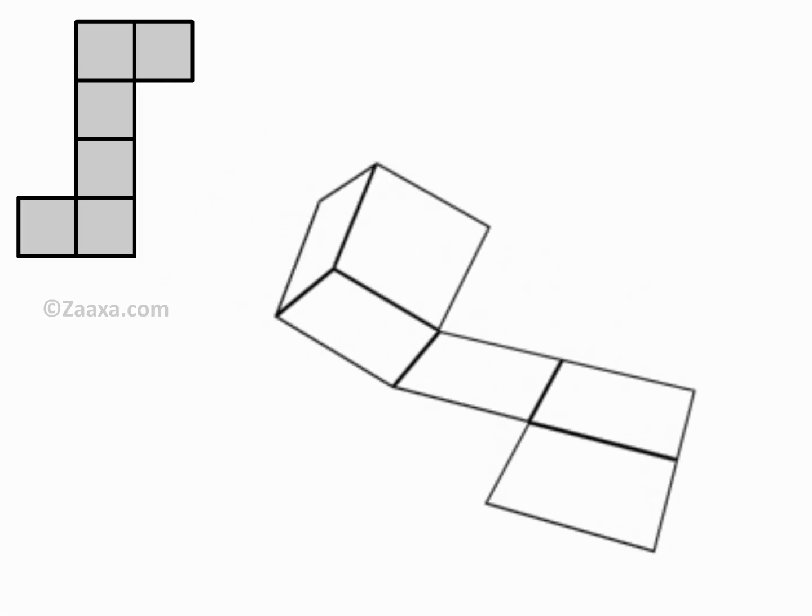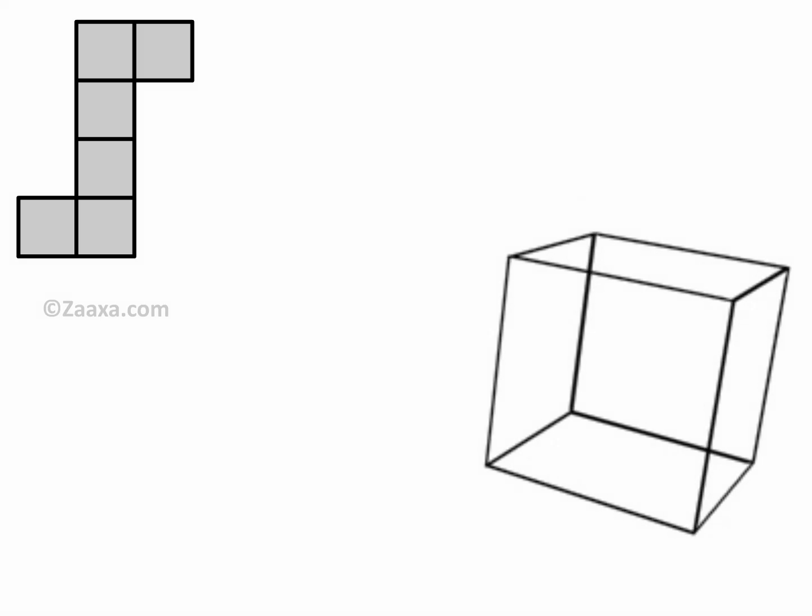The net of a solid is a flat figure that can be folded to get the shape of the solid. The lines are the places at which the folds occur. Note that when we draw a net, we have each face sharing at least one of its sides with another face. Thus, a net is a view of the solid's surface spread flat. In other words, the net of a solid is actually a two-dimensional figure that may be folded to form the three-dimensional solid.